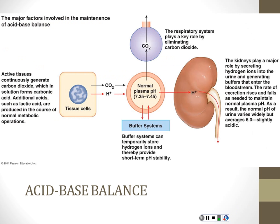There are three topics in this chapter: fluid balance, electrolyte balance, and acid-base balance. The first two are related because fluid and salt go together. The rest of the chapter is about acid-base balance. Problems with acid-base balance are a final common endpoint to lots of illnesses. Many disorders result in acidosis in particular. When the pH of the patient starts to fall, the whole system shuts down, because all of our body's enzymes are very pH-sensitive.